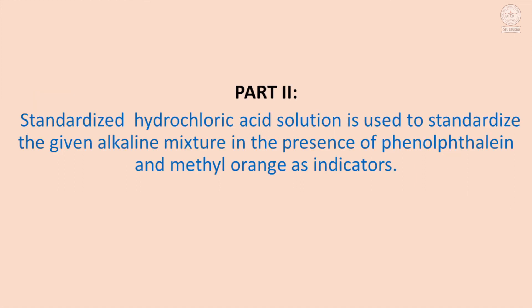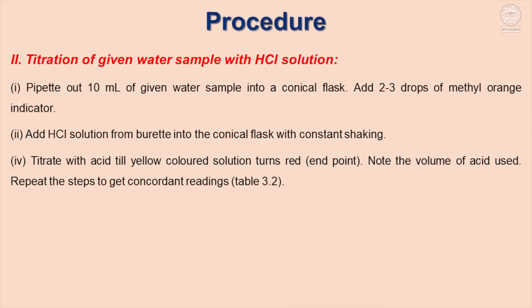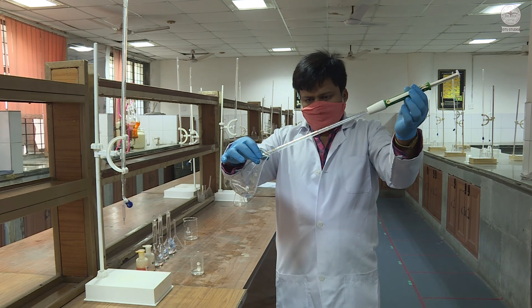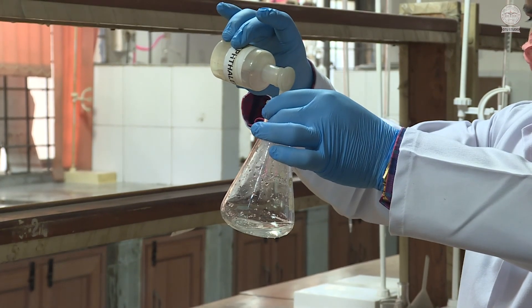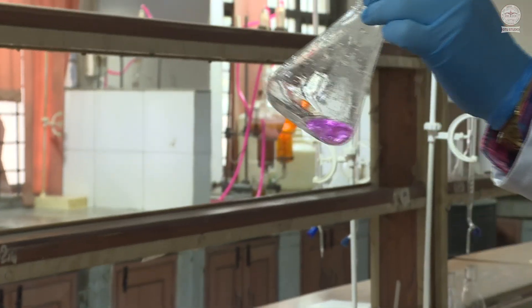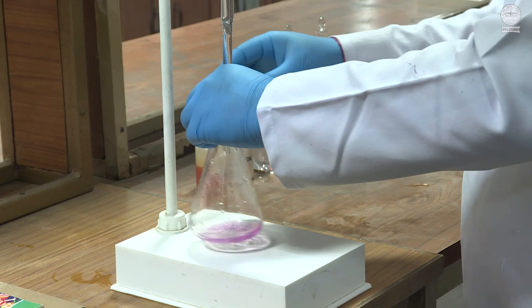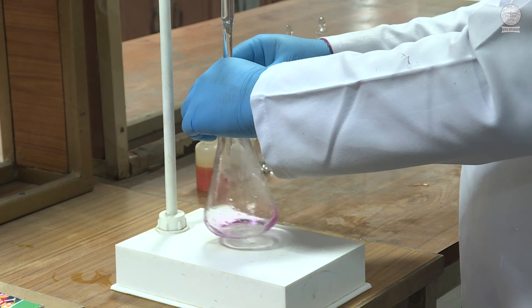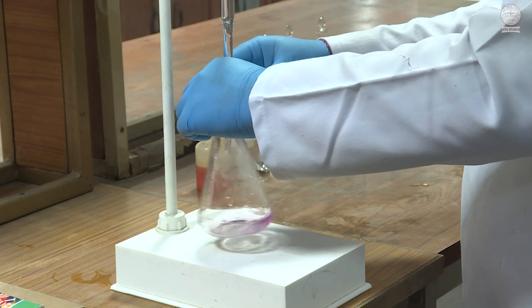Part two: standard hydrochloric acid solution is used to titrate the given alkaline mixture in the presence of phenolphthalein and methyl orange as indicators. Titration of the given alkaline water sample with hydrochloric acid solution: 10 ml of the given water sample is pipetted into the conical flask. Two to three drops of phenolphthalein indicator are added and the solution turns pink. Hydrochloric acid solution from the burette is added dropwise into the conical flask with constant shaking till the pink color disappears.